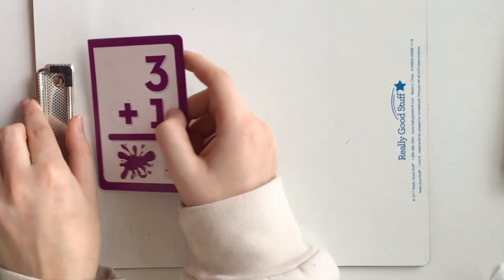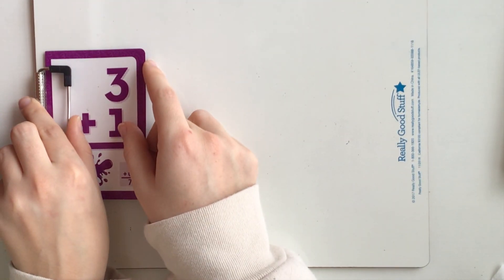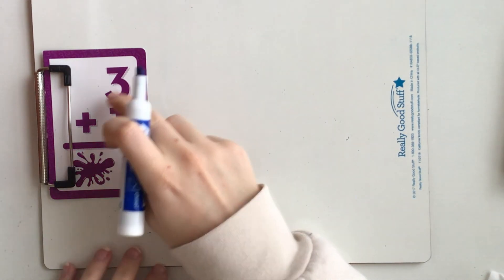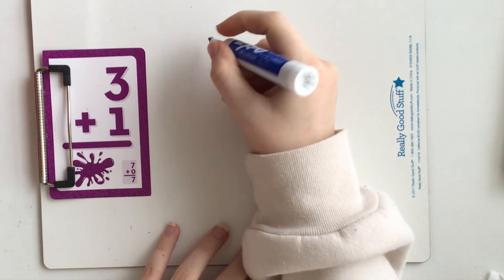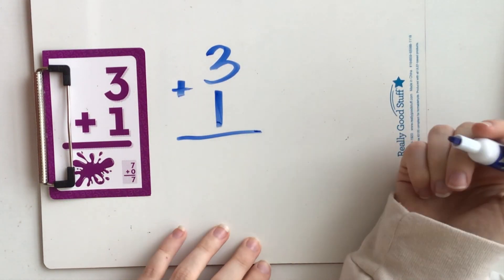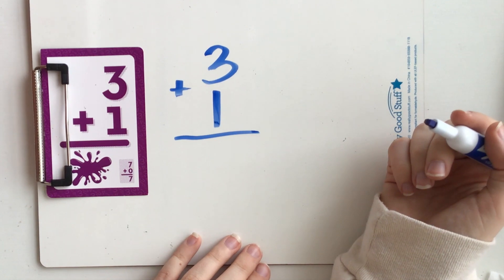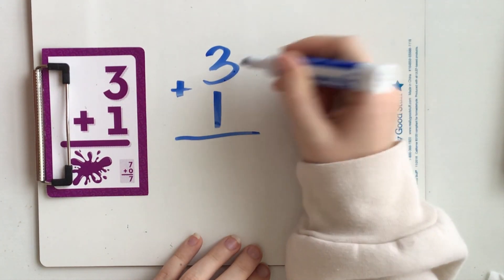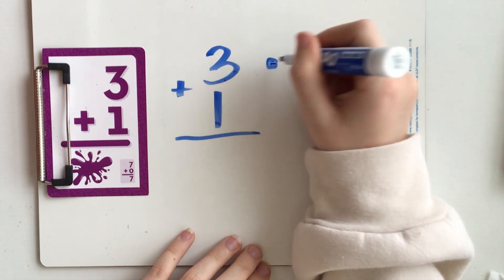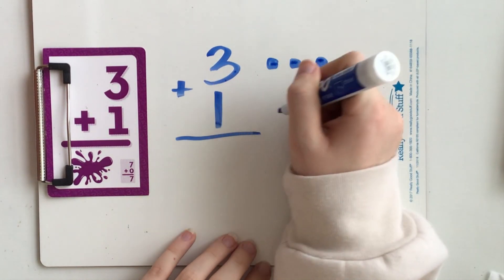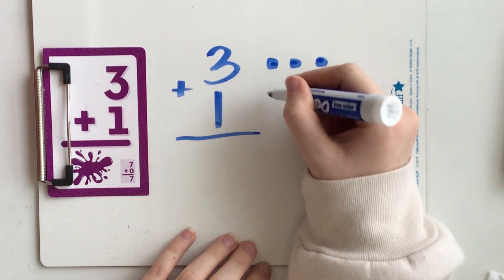Fourth problem. The next problem is three plus one. Let's do three plus one equals how many dots will I write off to this side? Three. One, two, three. How many dots will I write here? One.